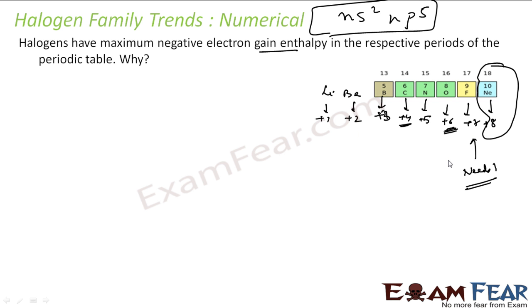In the case of the halogen family, they need only one electron to be stable, and thus electron gain enthalpy is very high — because gaining an electron makes them stable. Since they need only one electron, they happily accept it and become stable. They have a very high negative value of electron gain enthalpy because energy is liberated during electron gain. They also have the smallest size in their respective period.